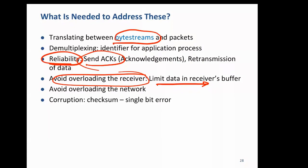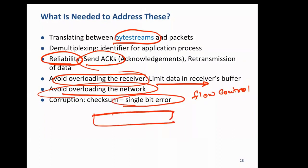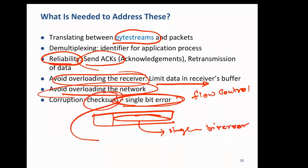That is called flow control. TCP has a mechanism for flow control. Similarly, if intermediate routers are congested, there is a way of controlling that — congestion control. If a single bit error happens in the packet, the TCP checksum should detect it. Nowadays error rates are very low because network quality has improved, so detecting a single flipped bit is generally sufficient.